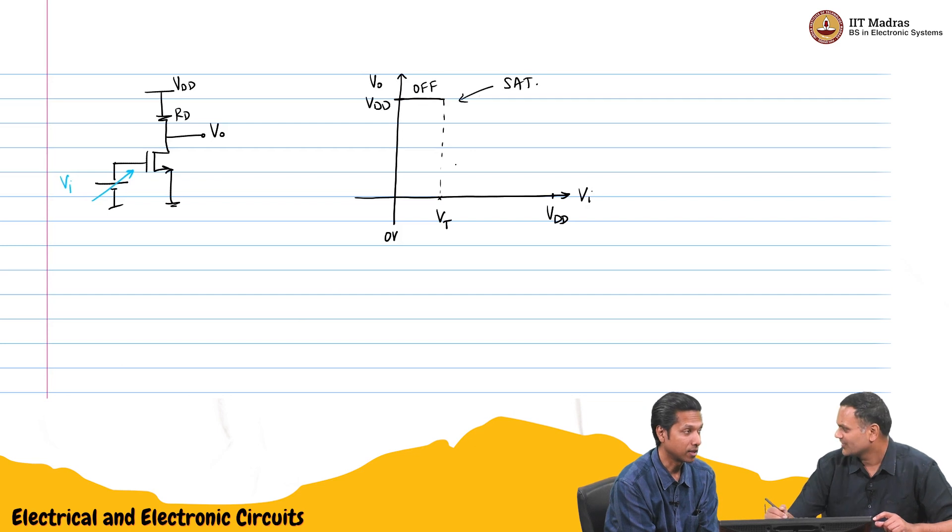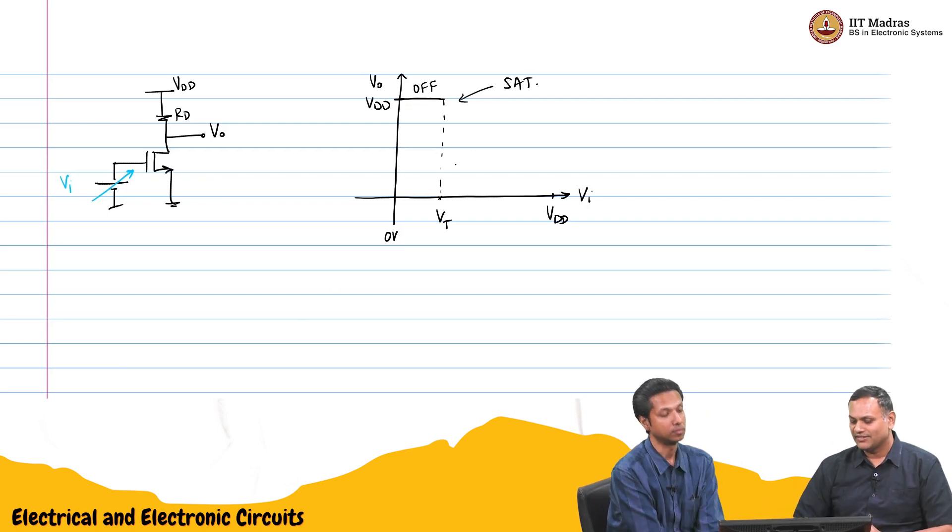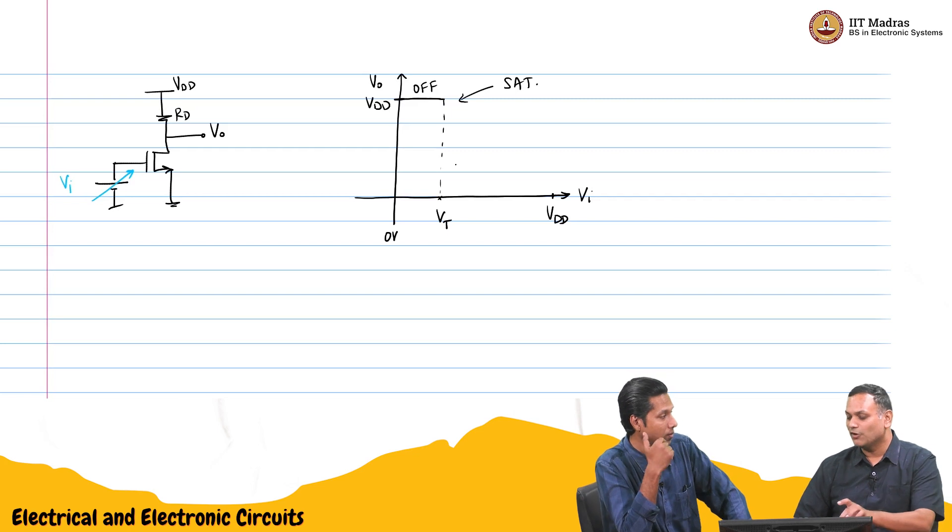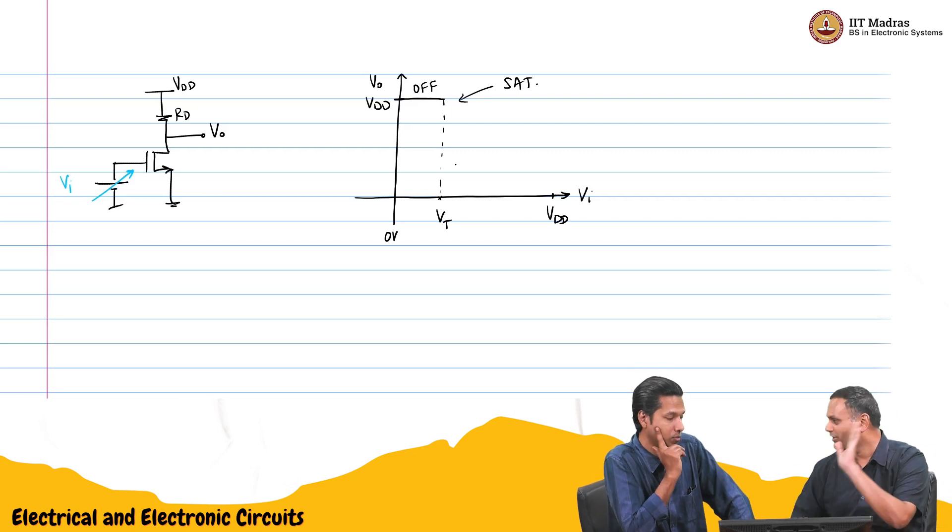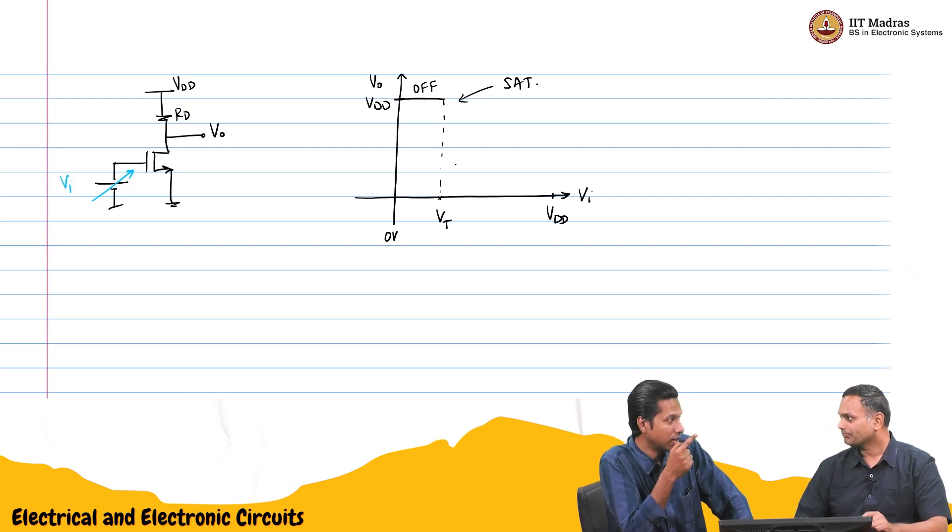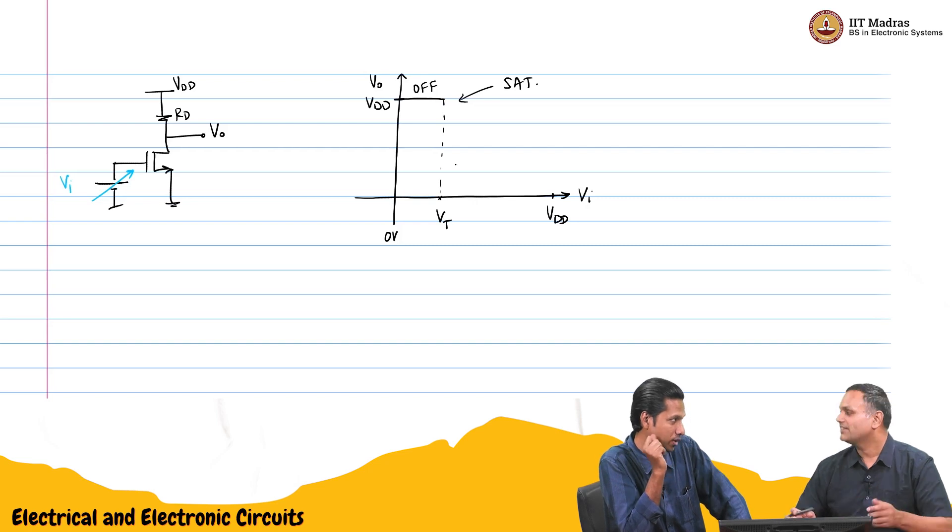Most likely here it is off. But my gut feeling is that in this region it will be in saturation. Because Vdd is large. And right now Vi is still small compared to Vdd. That means we can pick up the saturation equation.